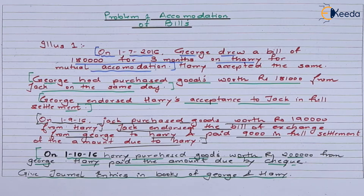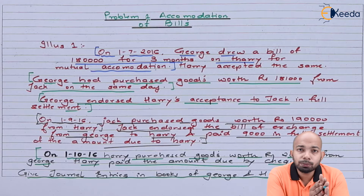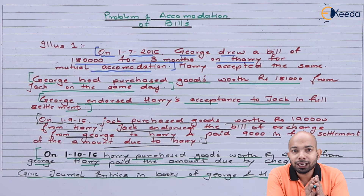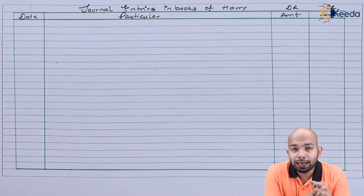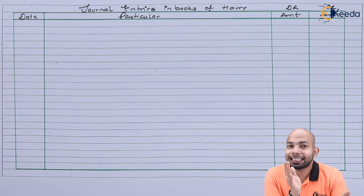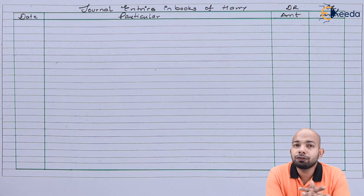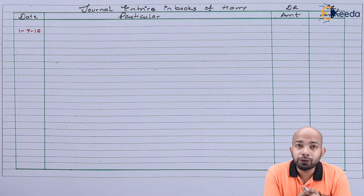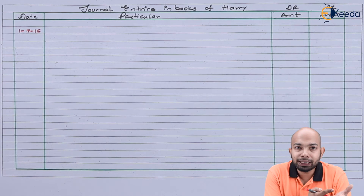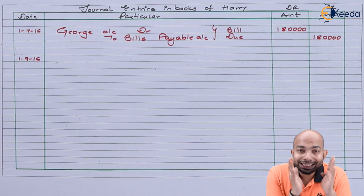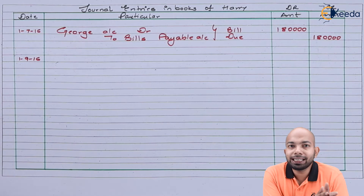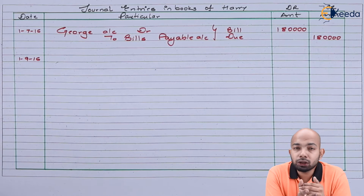We'll first prepare journal entries for George, then for Harry. Starting with the books of Harry — Harry is the drawee, so we'll think from the perspective of a buyer. As per the question, the bill was drawn on Harry and Harry accepted it, so we pass that entry first. Any transaction where Harry is mentioned will be taken into consideration.